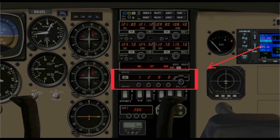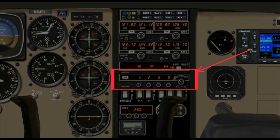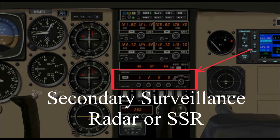The transponder in your airplane is part of what is called the air traffic control radar beacon system — that's a mouthful. So it's sometimes called the secondary surveillance radar, or SSR.